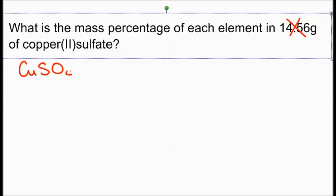Next, let's get the formula. Copper 2 sulfate is CuSO4. Copper is a plus 2 ion.